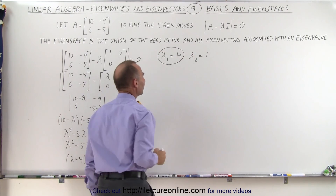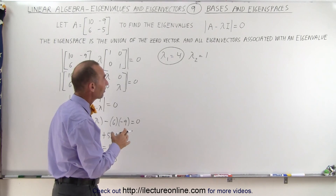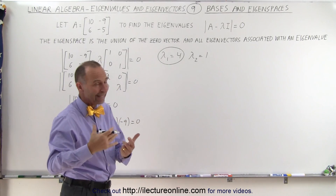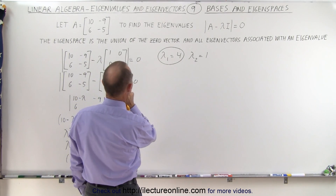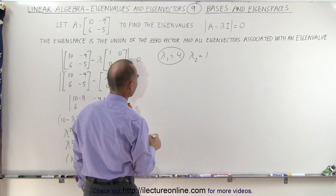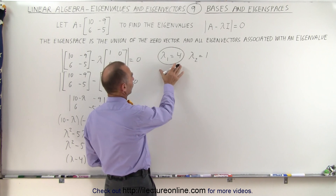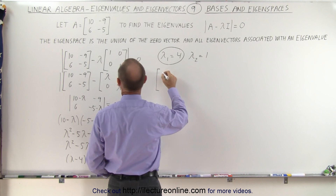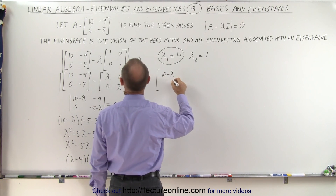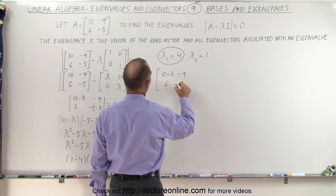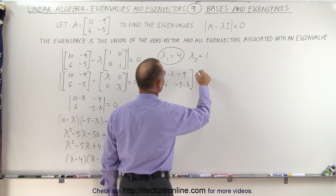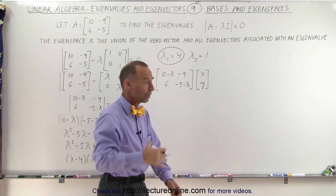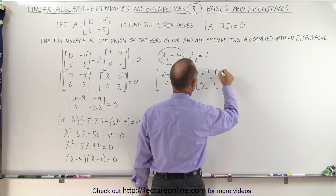So let's start with the first eigenvalue. We're going to find the associated basis, and of course that comes from finding the eigenvector. We're going to find the eigenvector, which will then define the basis and the eigenspace. To find the eigenvectors associated with this eigenvalue, we'll take the matrix (10 − λ), −9, 6, (−5 − λ), multiply that times the eigenvector defined by x and y, and set that equal to the zero vector.